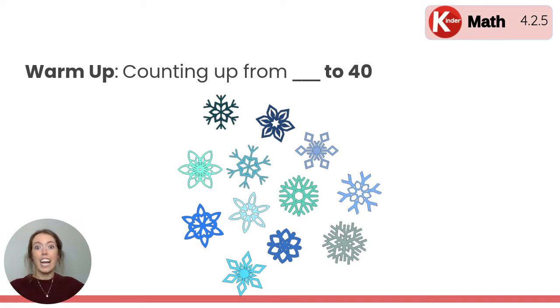Let's count to check. I'll start right here on the top, and this is 1, 2, 3, 4, 5, 6, 7, 8, 9, 10, 11, 12. There are 12 snowflakes, so we are going to count up from 12 all the way to 40, okay?